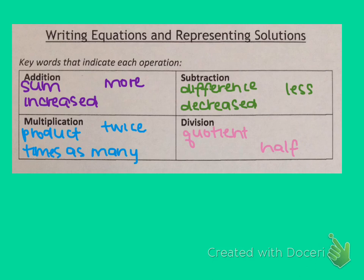The first thing we need to talk about before we even get into writing equations is what some key words are that indicate each operation. We have a table here and I've gone ahead and filled in some of the key words that indicate the different operations. What I want you to do is go ahead and fill this out on your note sheet, but if you think of any other words that indicate addition, subtraction, multiplication, or division, add them to those boxes and share those in class.